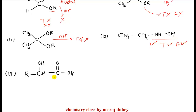Next example: alpha-hydroxy acid. Just like alpha-hydroxy aldehyde and alpha-hydroxy ketone, alpha-hydroxy acid also gives positive Tollens' and Fehling's tests.